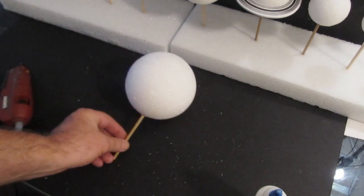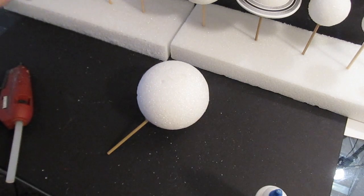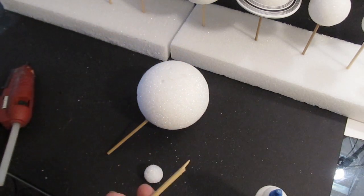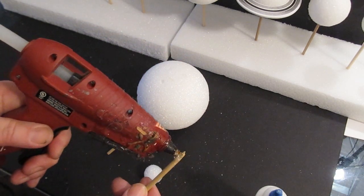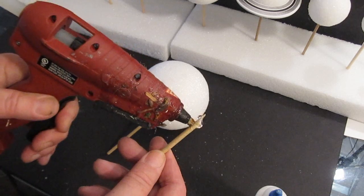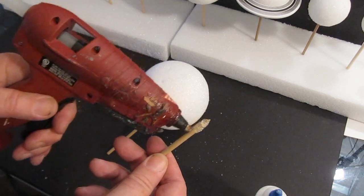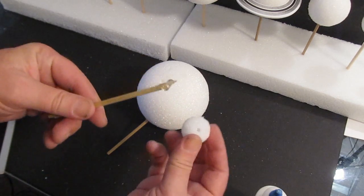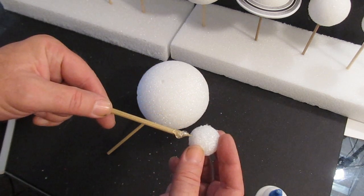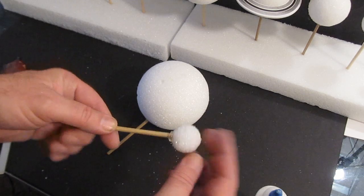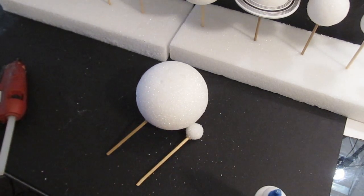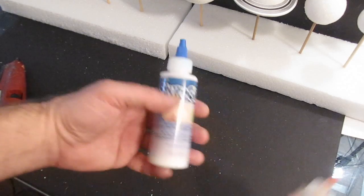Now you glue the dowel into the sun or the planet. But you don't glue it into the base yet. And that's to make it easy to paint. So glue all of those planets onto the dowels and then we'll go ahead and paint them. And then once they're painted, then we'll glue them into the base or the two base pieces.